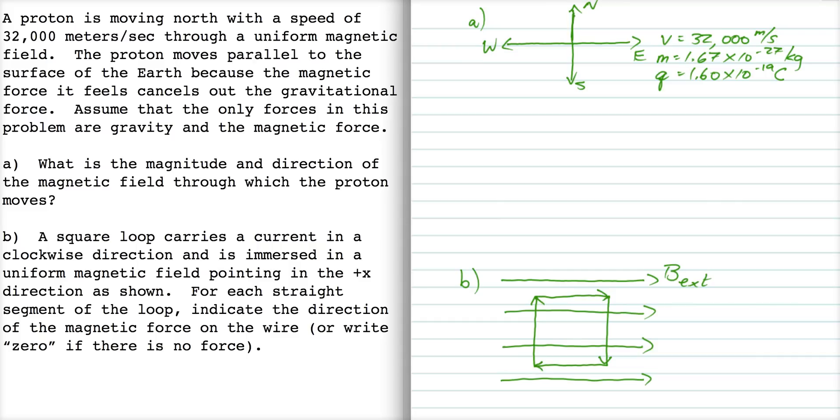And then this will be the direction of motion for our proton. This is our velocity, V. And we need to know, now, the gravitational force is seen from above. This is a top view.